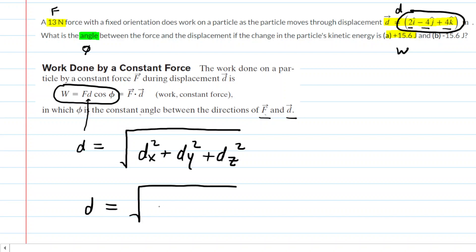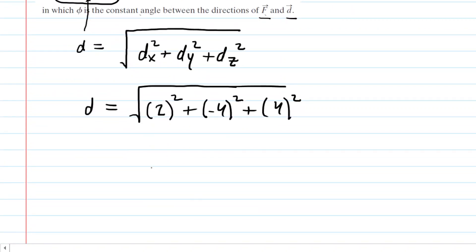We're going to go ahead and plug in the x, y, z components. The x component is 2 squared, the y component is negative 4 squared, and the z component is positive 4 squared. When we process what's underneath the radical, we get 36. We take the square root and get a displacement magnitude of 6 meters.